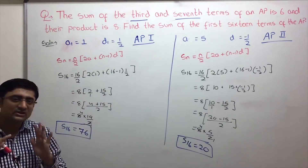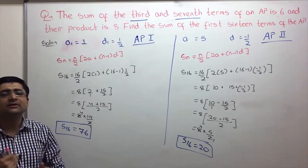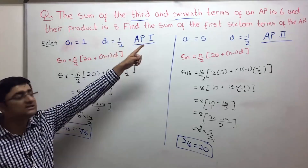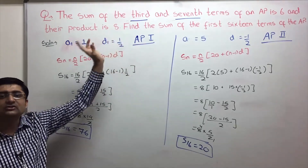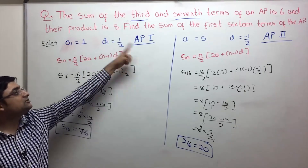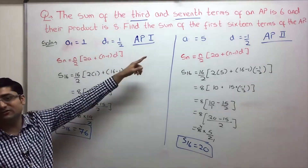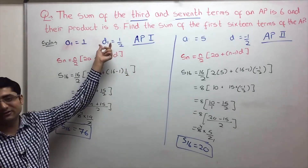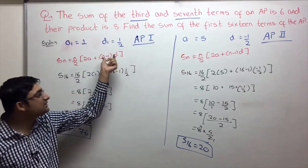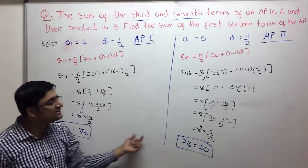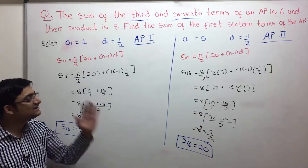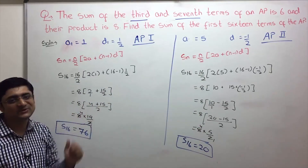To recap: we were given sum of the third and seventh terms is 6 and their product is 8. Solving the two equations gave two values of D, and two corresponding values of A, giving two different APs. AP1 has first term 1 and common difference half, with sum of first 16 terms equal to 76. AP2 has first term 5 and common difference minus half, with sum equal to 20.